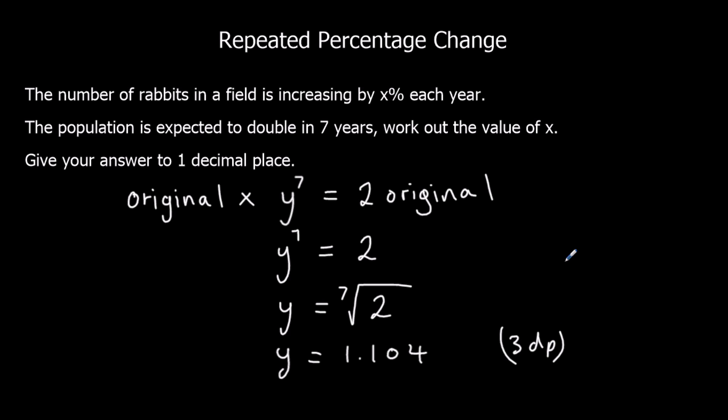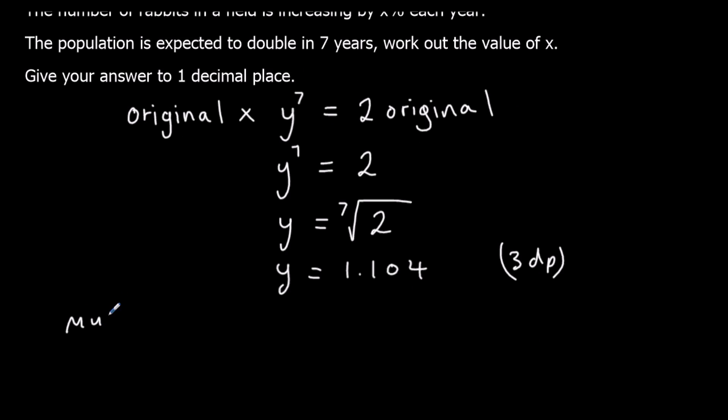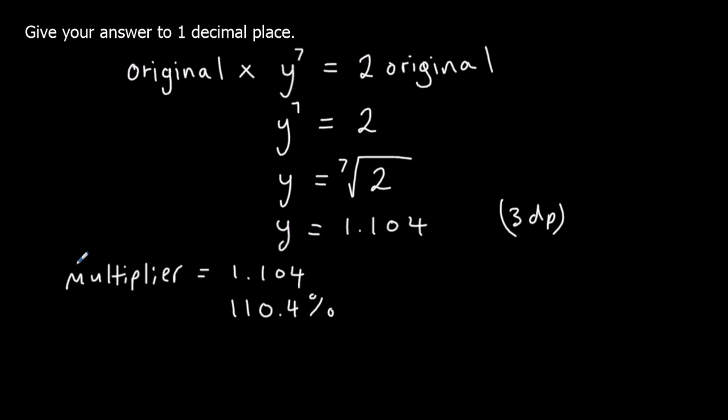So our multiplier is 1.104. So if I times it by a hundred, that's a hundred and ten point four percent. And so the increase, the value of X. If each year we get a hundred and ten point four percent of what we had previously, that means the increase, or X, must be ten point four percent.